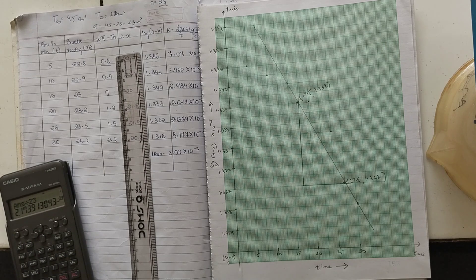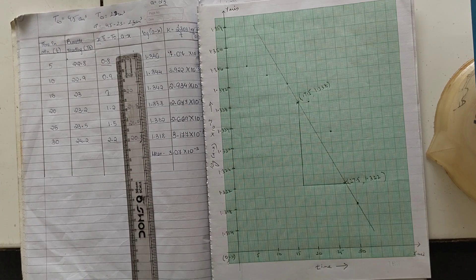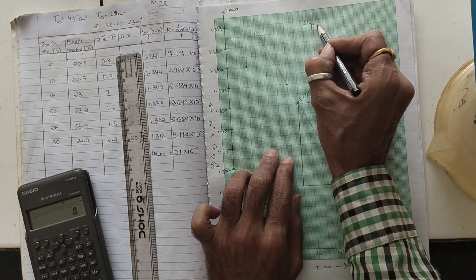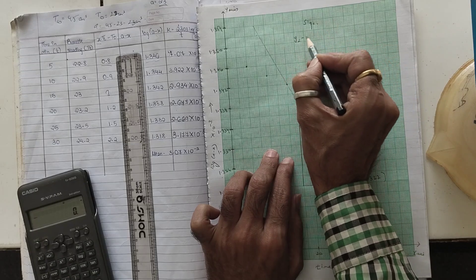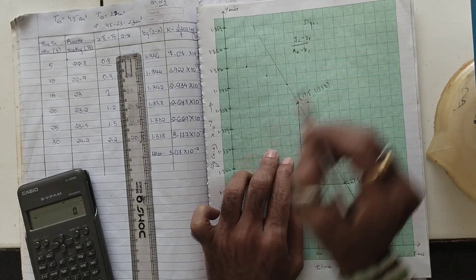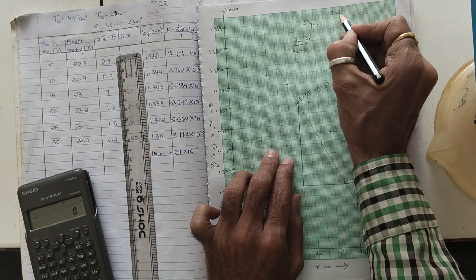These are the two points that are selected for the slope. Now if you can write the coordinates of this, this is 17.5 comma 1.3338 and this is going to be 27.5 comma 1.322. These are the coordinates of the points that we have selected for determination of slope. Now if you do a calculation of that, the slope calculation is Y2 minus Y1 upon X2 minus X1.